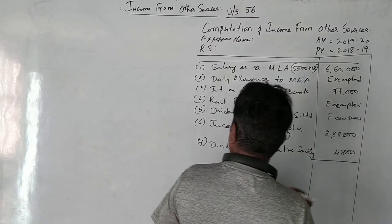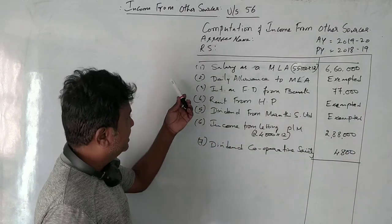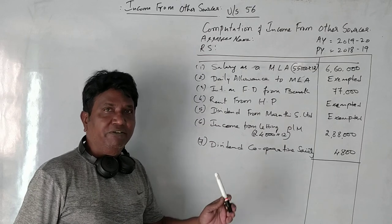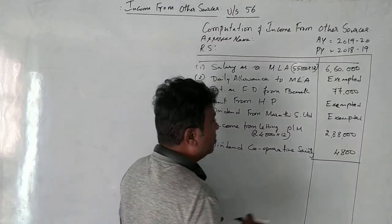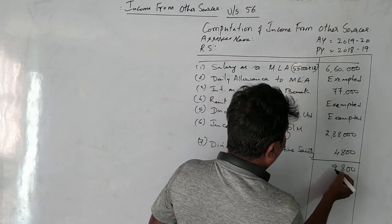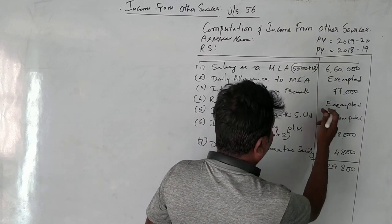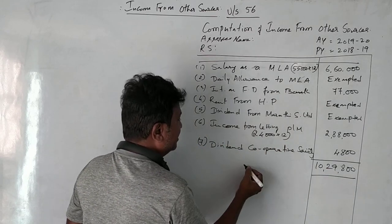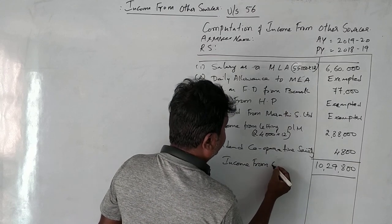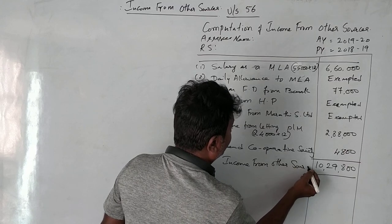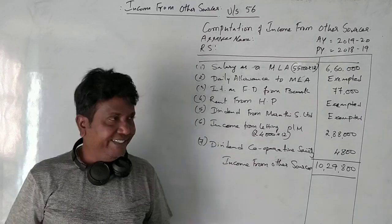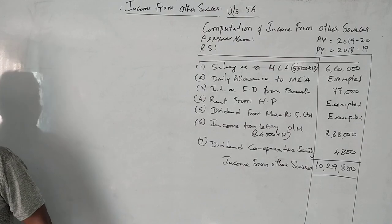That covers all seven points. After totaling all the taxable items — salary as MLA 6,60,000, FD interest 77,000, plant and machinery income 2,88,000, and cooperative society dividend 4,800 — we arrive at the total income from other sources. This is the solution to the 2015 question paper for 6 marks. I hope all of you have understood.